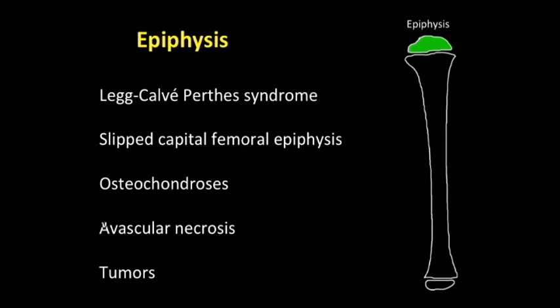Let's start with the epiphysis. Here is a fairly comprehensive differential for epiphyseal lesions in children: Legg-Calvé-Perthes disease, slipped capital femoral epiphysis, osteochondrosis, avascular necrosis, and certain tumors. We're going to go through each one of these.